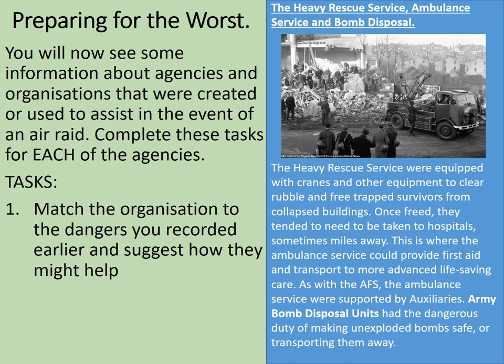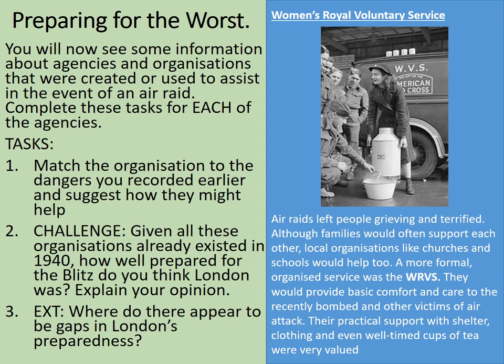The Women's Royal Voluntary Service: air raids left people grieving and terrified. Although families would often support each other, and local organisations like churches and schools would help too, a more formal organised service was the WRVS. They provided basic comfort and care to the recently bombed and other victims of air attack. Their practical support with shelter, clothing, and even well-timed cups of tea were very valued — how very British. Now complete task one again, and then tasks two and three bearing in mind all of the organisations. As a challenge: given all these organisations already existed in 1940, how well prepared for the Blitz do you think London was? And as an extension, where did there appear to be gaps in London's preparedness, if any? Pause the video and complete the tasks.